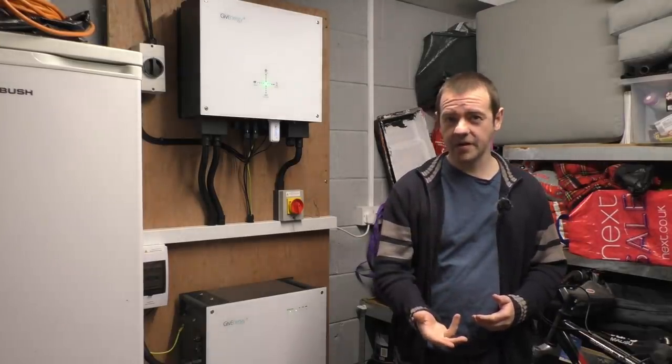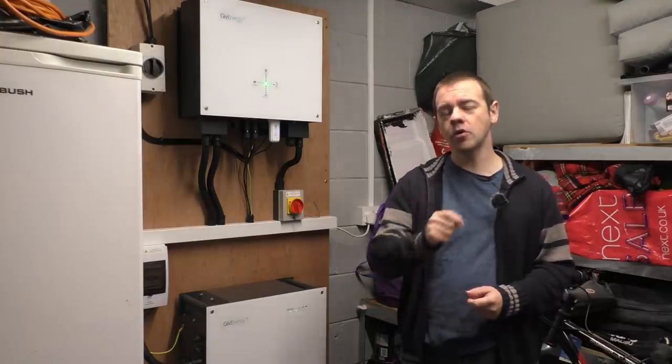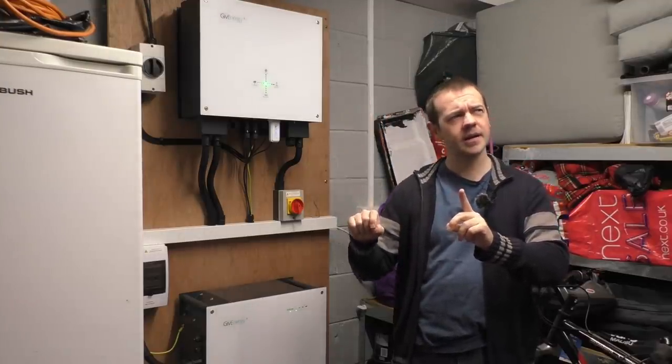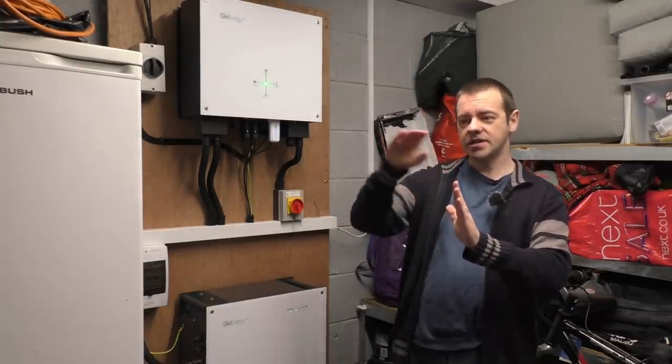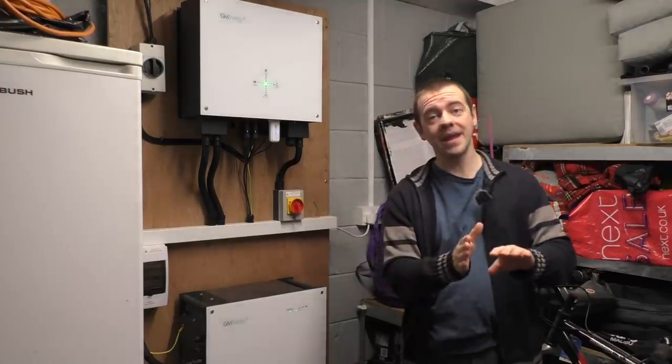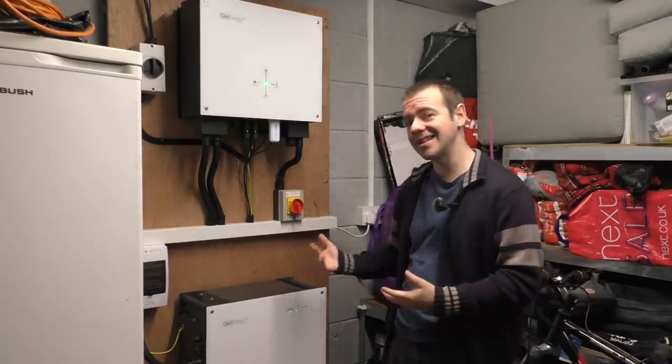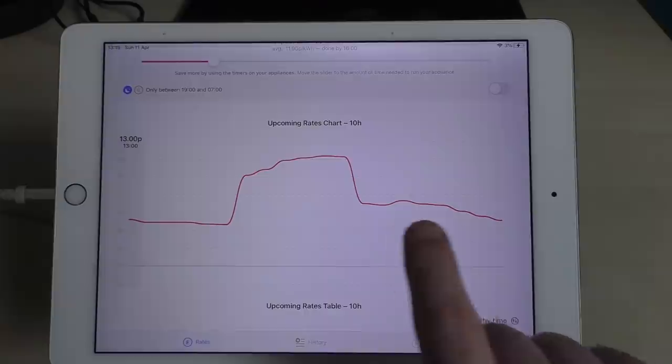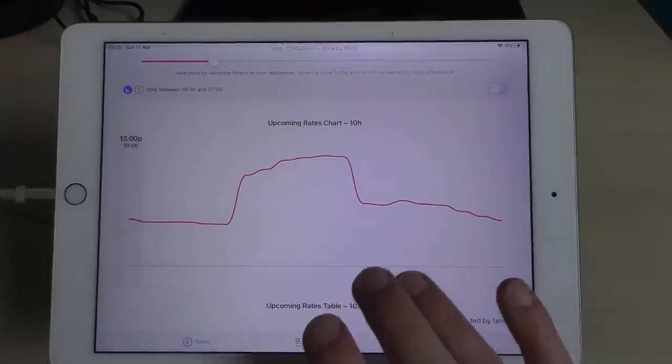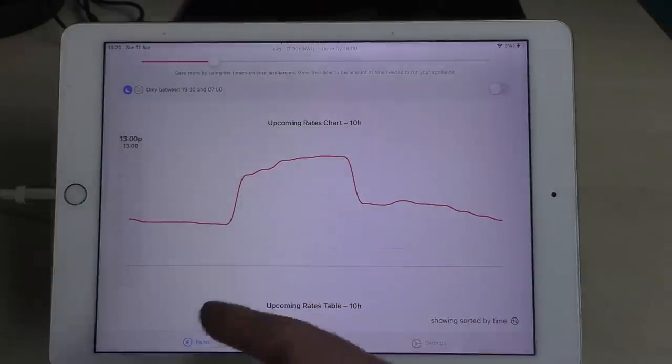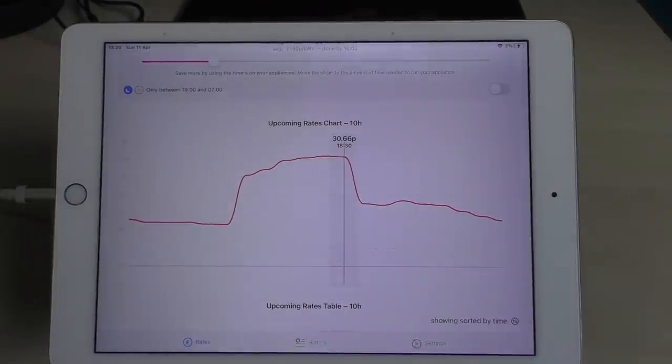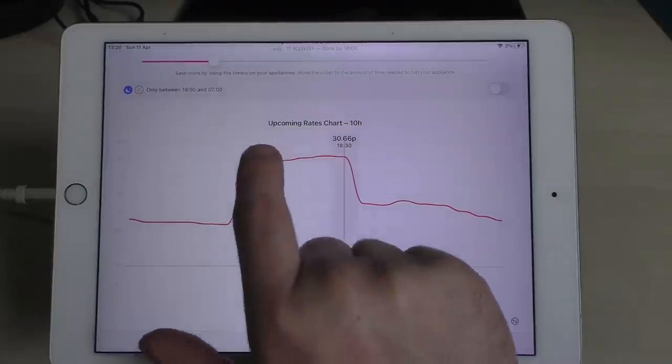I'm going to have to now explain the Octopus Agile tariff very briefly. The Octopus Agile tariff is effectively a variable tariff that changes every 30 minutes throughout the day. For between 4 and 7 p.m. peak time, it is artificially increased by 12 or 13 pence per kilowatt hour, which effectively means that Agile is designed to make people shove their peak usage out of peak time. With a battery, you can do that. So you can see the graph going up at peak there and then leveling off for other times during the day.